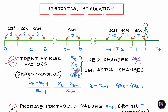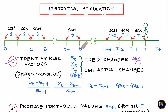You may also have risk factors for which changes from one day to the next are more appropriately expressed as actual changes. Examples of such risk factors are interest rates and credit spreads, where the change in the interest rate between the close of day t-1 and the close of day t would be calculated as an actual difference.